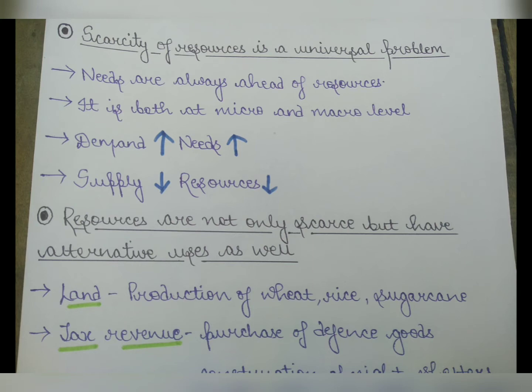We have no limit to our needs. Another point: resources are not only scarce but have alternative uses as well. For example, we have land — we cannot use it for only one thing. We use that land for different things.